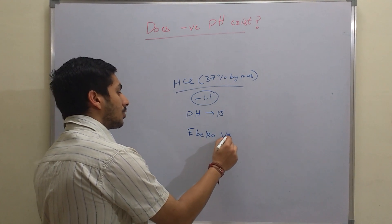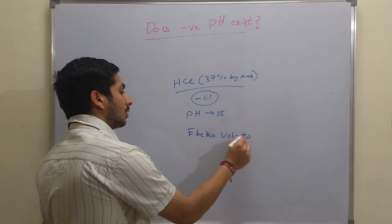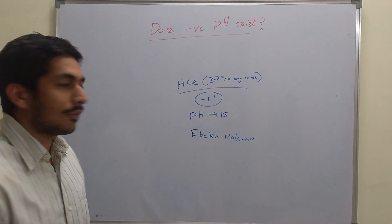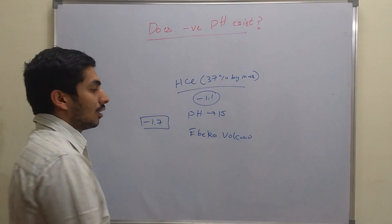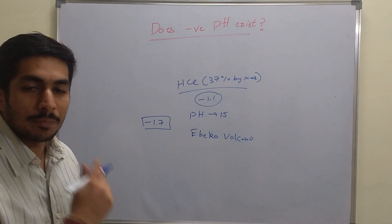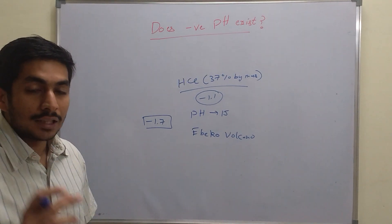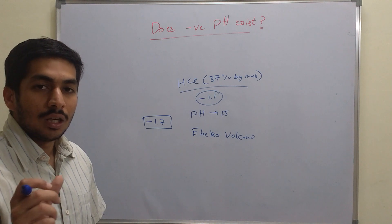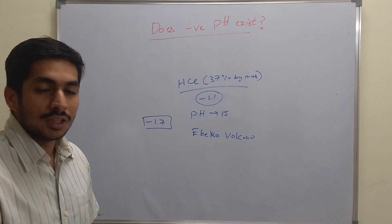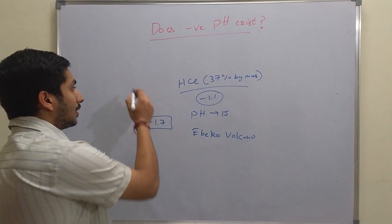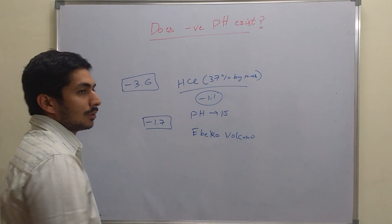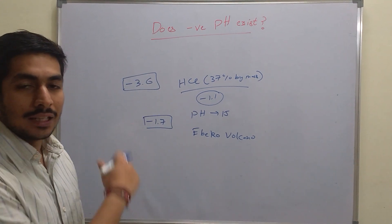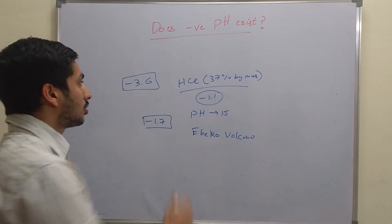This is Ebeko volcano in Russia, and the hot springs near this volcano have a pH of minus 1.7. The lowest pH that has been found in nature is minus 3.6.